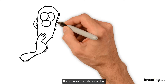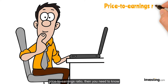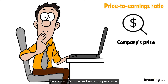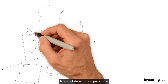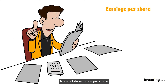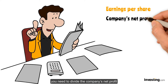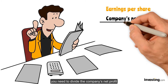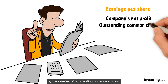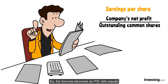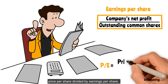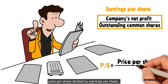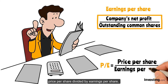If you want to calculate the price-to-earnings ratio, you need to know the company's price and earnings per share. To calculate earnings per share, you need to divide the company's net profit by the number of outstanding common shares. So the formula is: P/E Ratio = Price Per Share divided by Earnings Per Share.